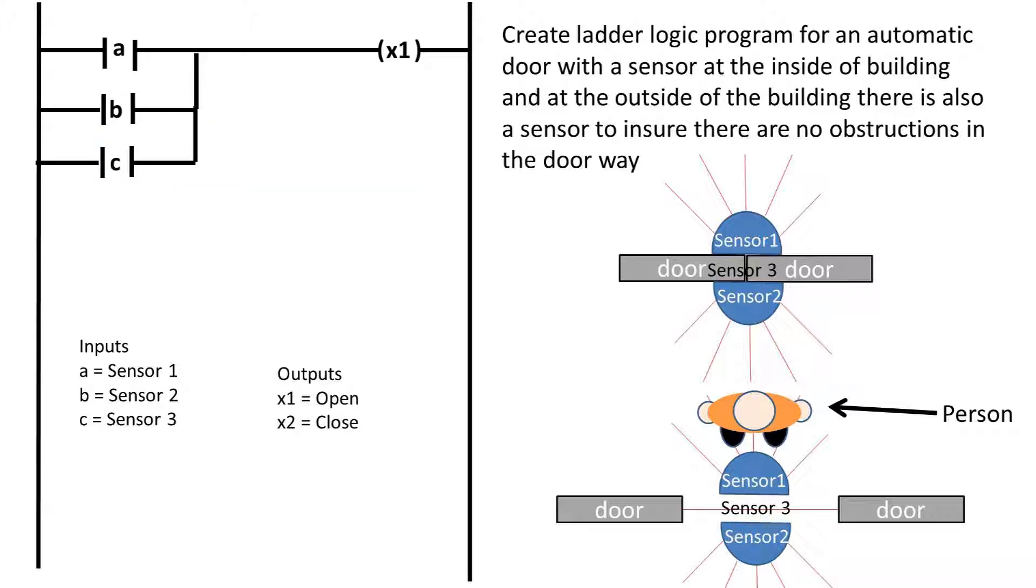So the way I went about this is we have three sensors that if any or multiple sensors register a person or object, the door must open. This is an OR statement, so we will place three inputs with normally open contacts in parallel and connect it to the output coil, which opens the door.